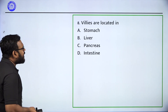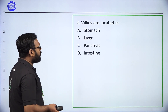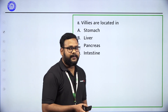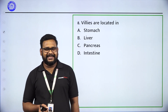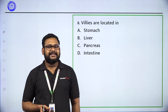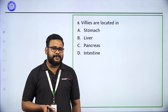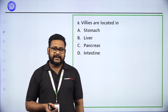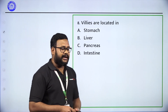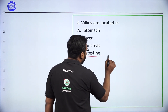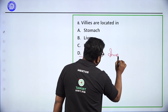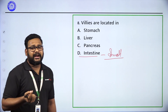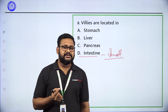Villi are located in — stomach, liver, pancreas, or intestine? Villi are located in the intestine, especially the small intestine. They are small finger-like structures present in the small intestine.